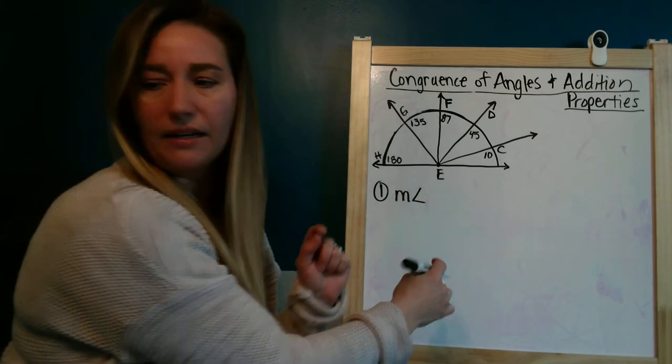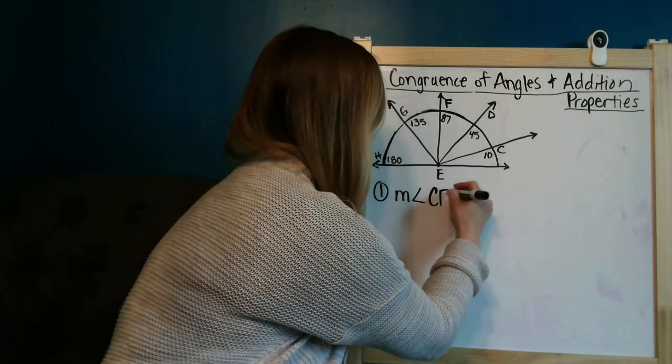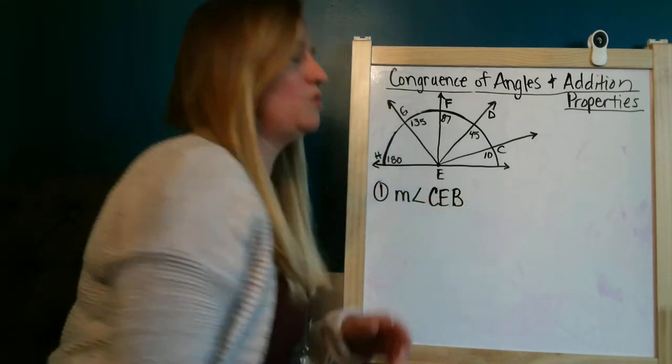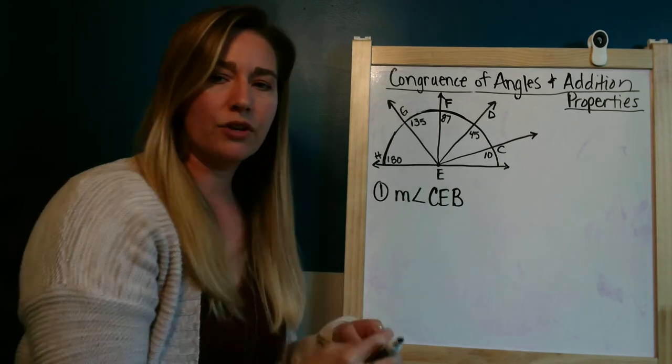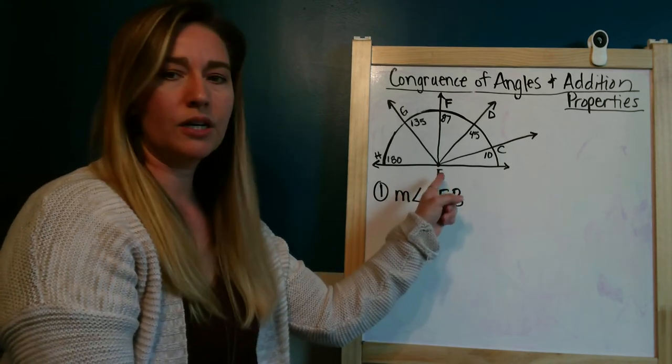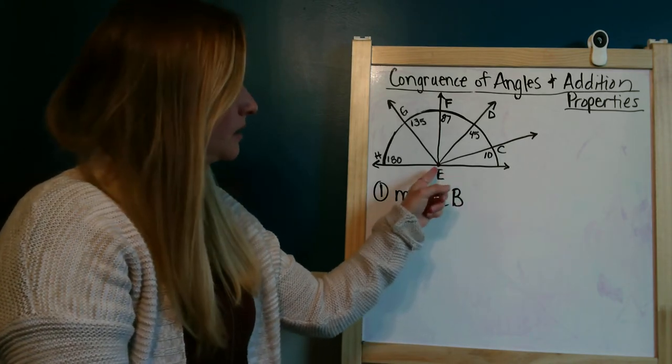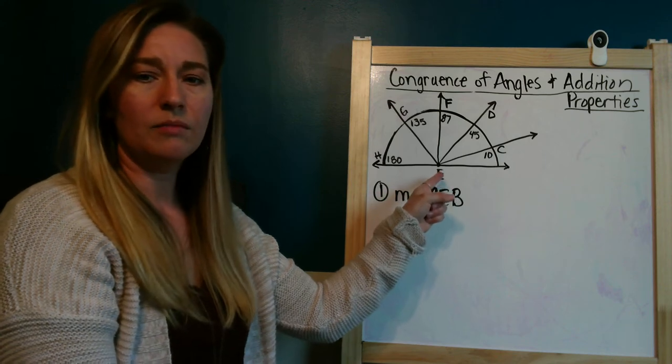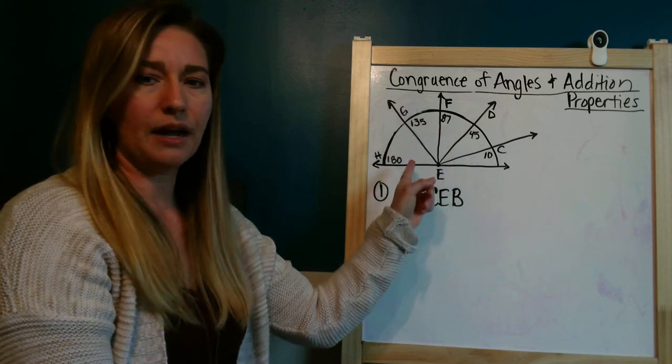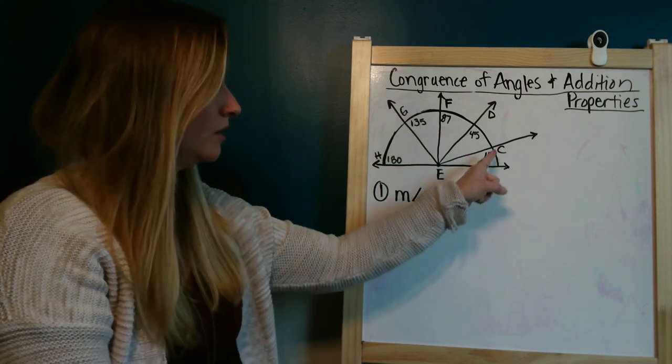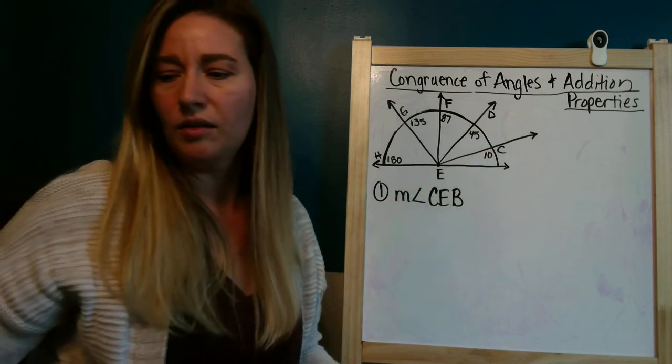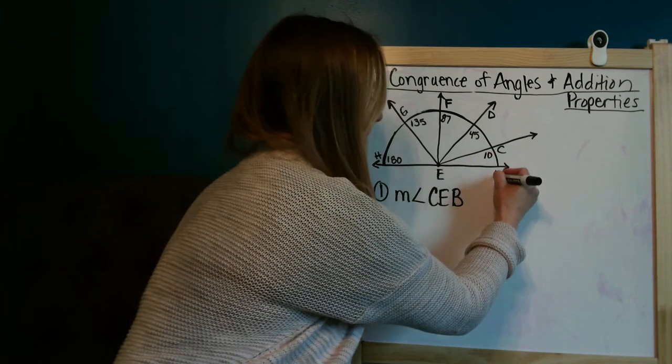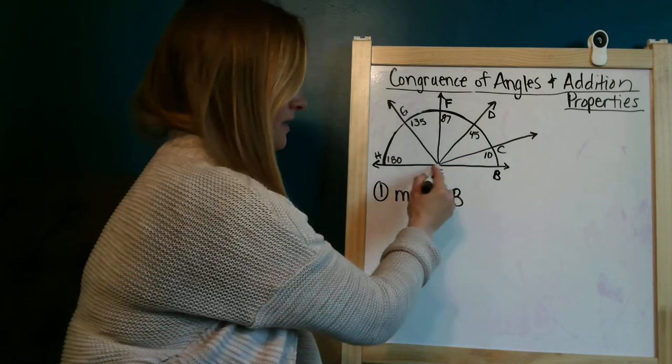And again we're trying to find CEB, and anytime you name an angle you have to make sure you include that center point because you can't just say angle E because that talks about all of these different angles here. So we're going to look at angle CEB. This is B right here.